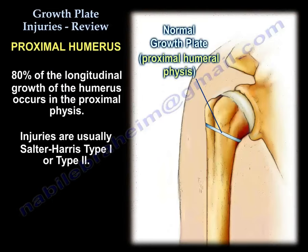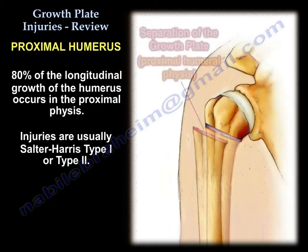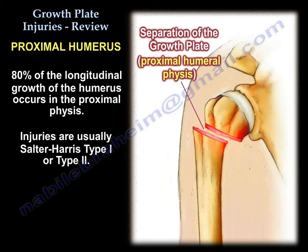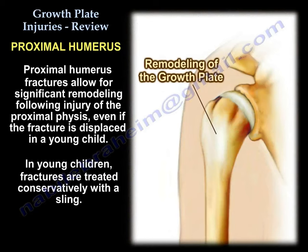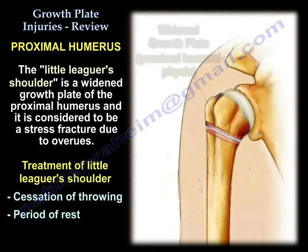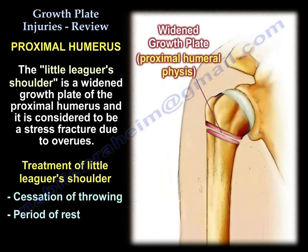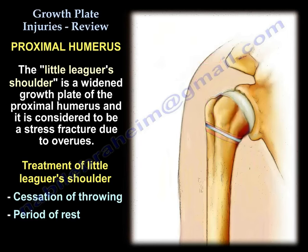For the proximal humerus, 80% of longitudinal growth occurs at the proximal physis. Injuries are usually Type 1 or Type 2. In young children, the proximal humerus allows for significant remodeling even if the fracture is significantly displaced, so we treat conservatively with a sling. Little Leaguer's shoulder is a widened growth plate of the proximal humerus, considered a stress fracture from overuse; treatment is cessation of throwing and a period of rest.